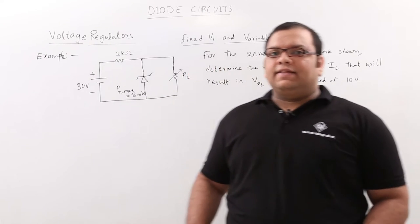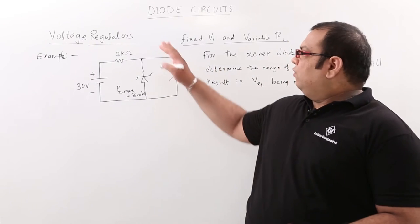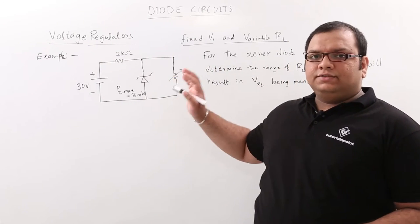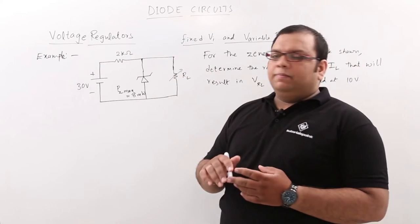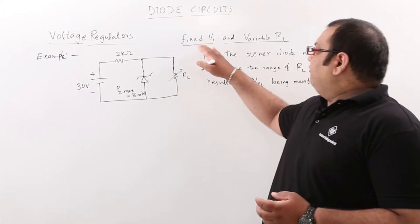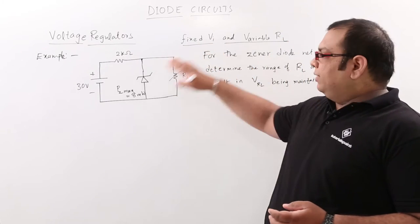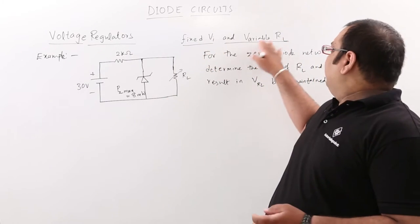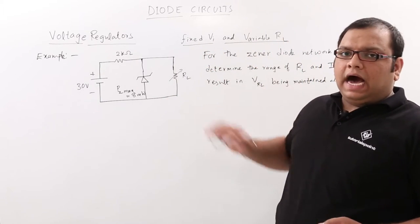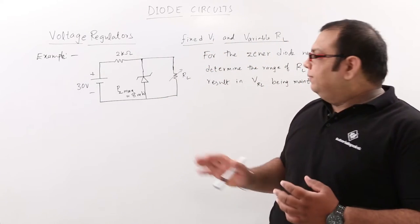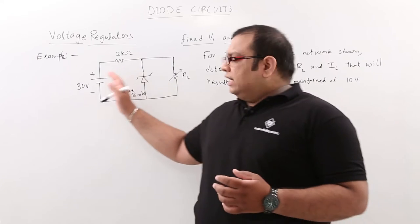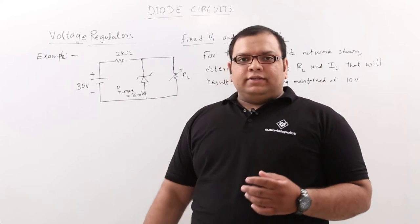In this class, let us discuss another problem on voltage regulators. In this problem, the input voltage Vi is fixed but the load resistance RL is variable. Let us see the example here.